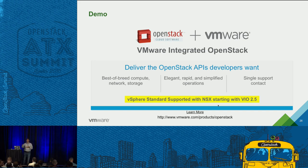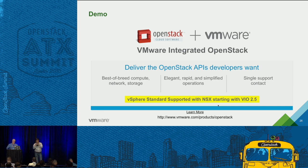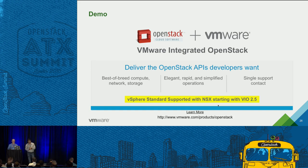From the audience: from a scale perspective, you mentioned 5,000 to 6,000 VMs in a single vCenter — is multiple vCenters on the roadmap? Yes, absolutely. Multiple vCenters within one control plane is what we are working on. Right now in actual production environments, one vCenter supports about 5,000 VMs and 5,000 volumes — so about 10,000 total objects inside vCenter is good out of the box.